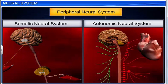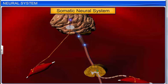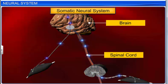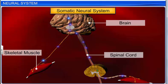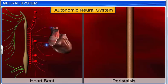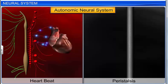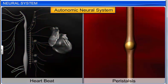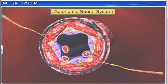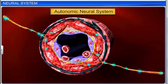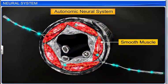The peripheral neural system can be further divided into the somatic neural system and the autonomic neural system. The function of the somatic neural system is to relay impulses from the central neural system to the skeletal muscles. The autonomic neural system controls involuntary functions such as heartbeat and peristalsis, because the nerve fibers of the autonomic nervous system extend up to the visceral organs and smooth muscles of the body.